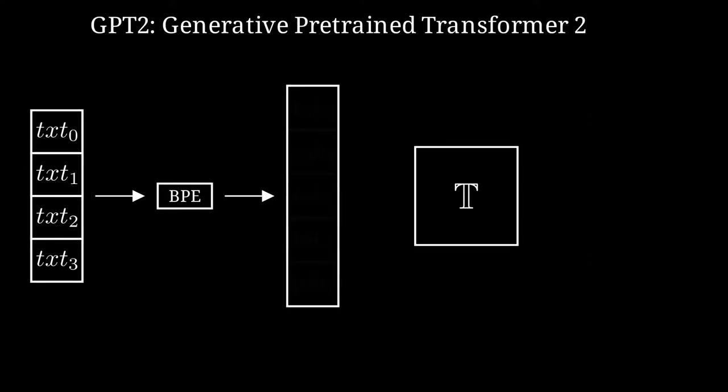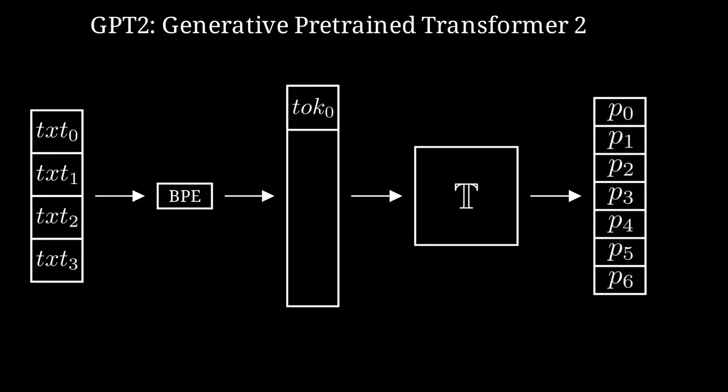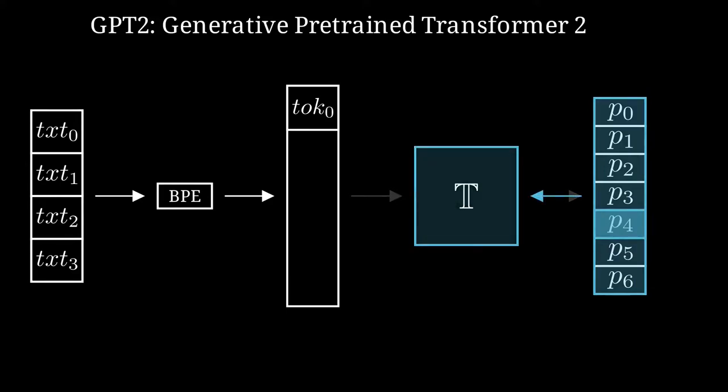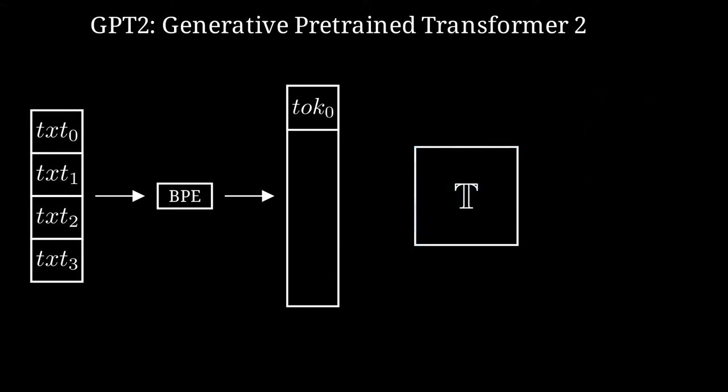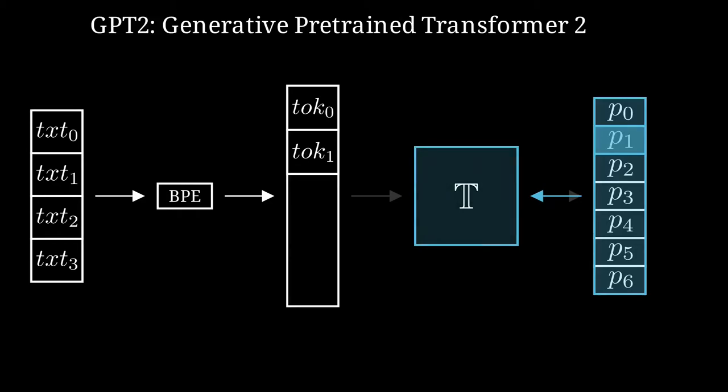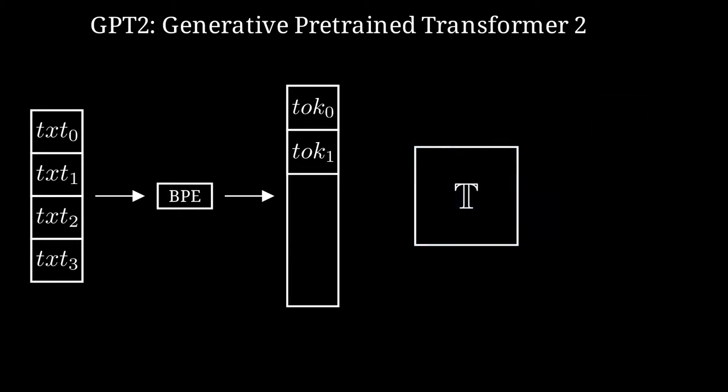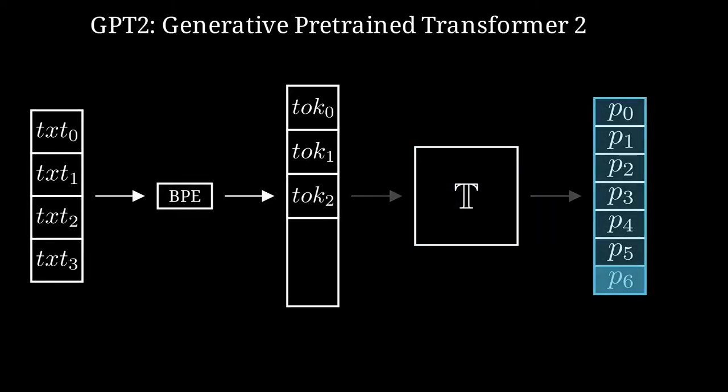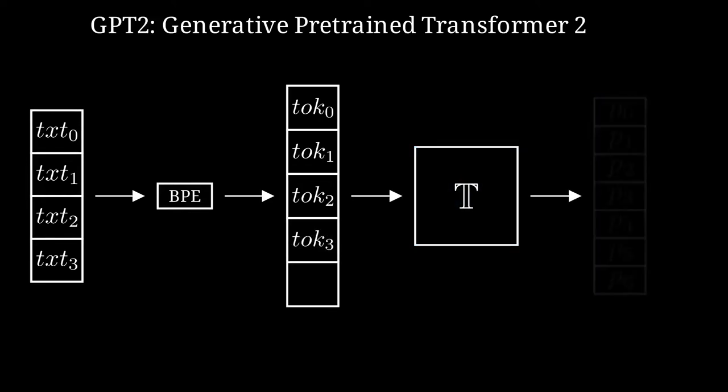During the training, it's fed with the previous tokens, here we are using just the very first, and it is trained to maximize the correct probability of the next one. This training process is repeated using all the available tokens. This pre-training technique is called Causal Language Modeling.